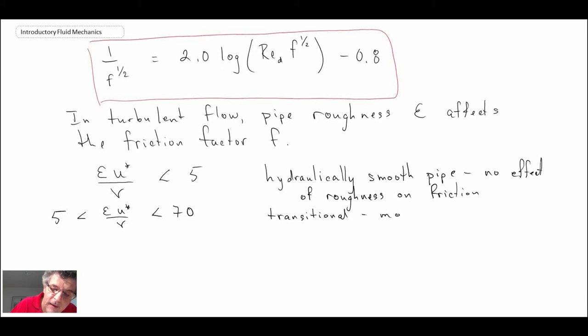If the number ranges between five and seventy, the number being our length scale times the friction velocity divided by the kinematic viscosity, this is transitional and it results in moderate Reynolds number effects.